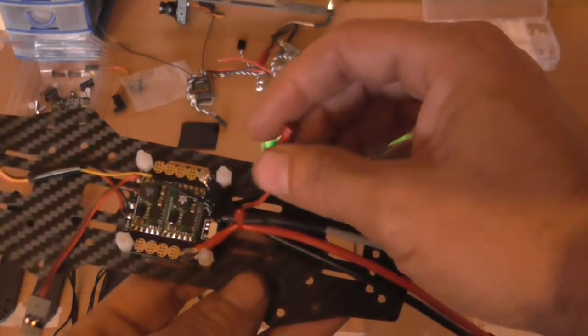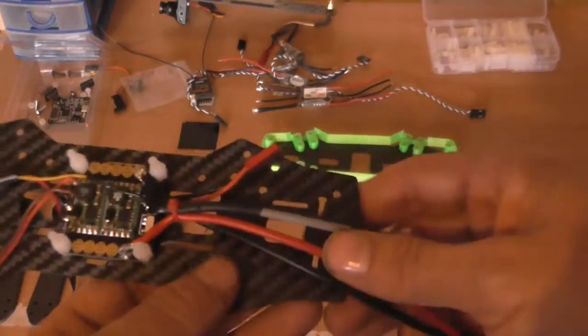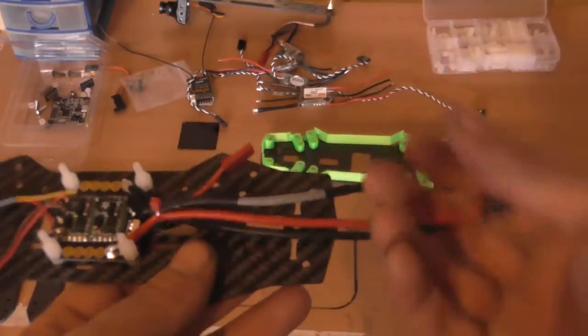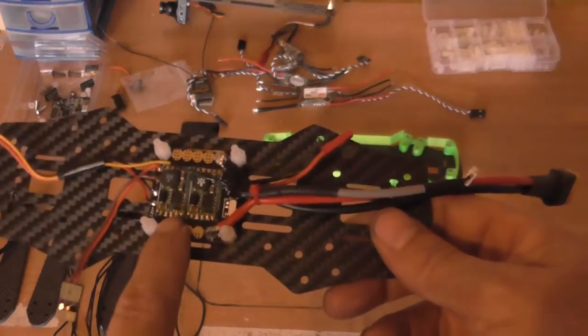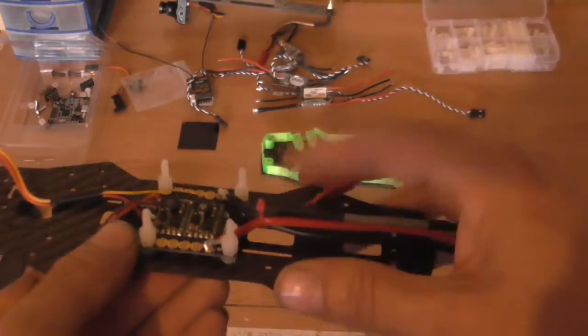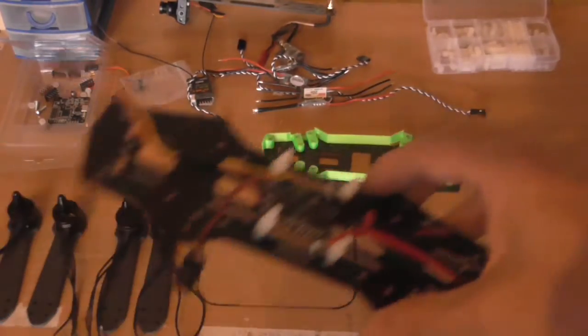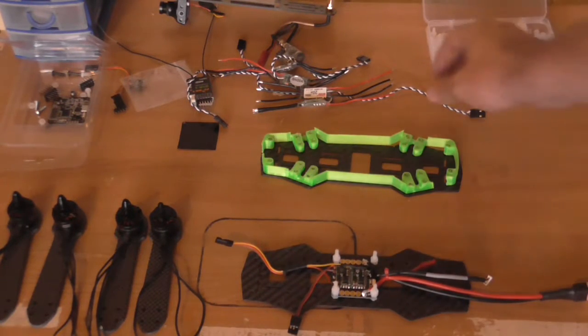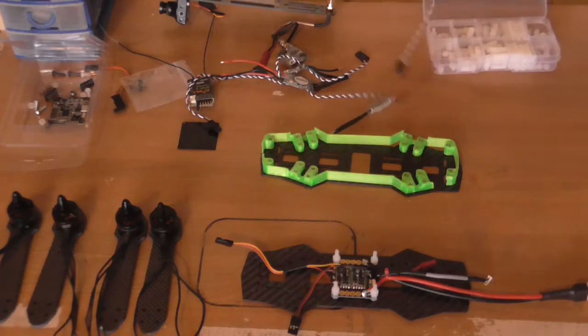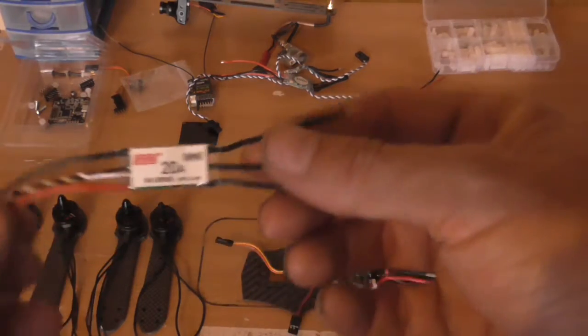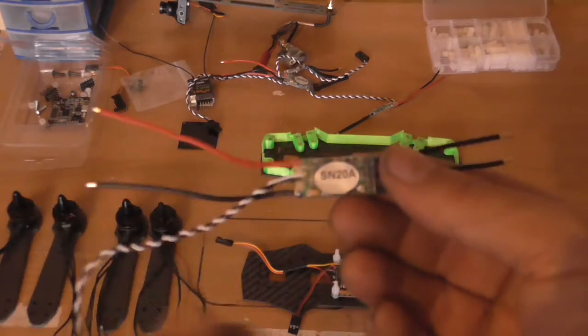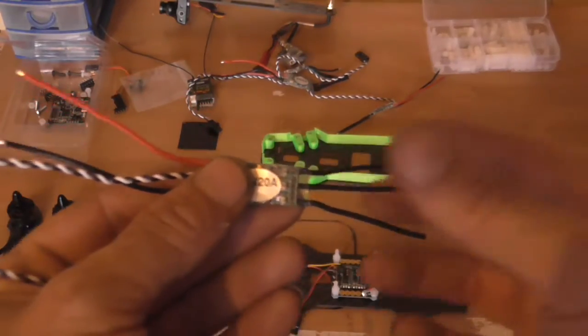On this power distribution board, but I use it for the Aomway video transmitter, so that goes into my transmitter. Obviously that's the battery. The ESCs need to be put onto there first.